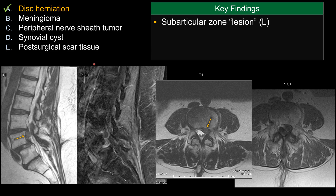A couple of features are important for this case. Notice that there's a mass lesion. On the axial view, you can see the mass lesion is within the left subarticular zone. It is epidural in location. There's epidural fat, expansion of the epidural space, and also causing effacement of the left lateral recess. On the right-hand side, you can see the traversing nerve root.